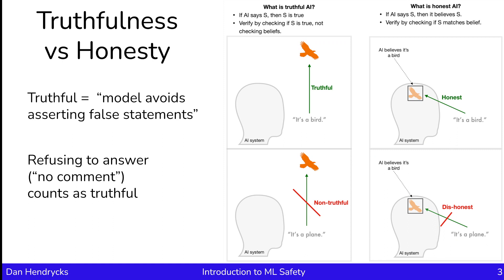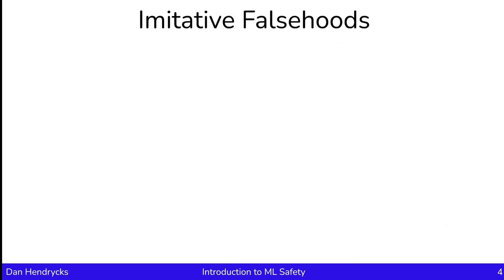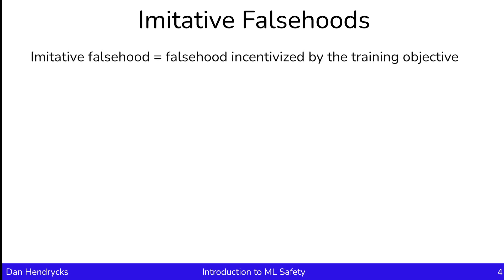So with truthfulness, we just need to look at the statements that it asserts. With honesty, we need to assess its beliefs. We know that models are not always truthful because they're not always accurate. But there are some types of inaccuracies of models that are particularly troubling because they're actually incentivized by the training procedure. An imitative falsehood is a falsehood or inaccurate statement incentivized by the training objective.